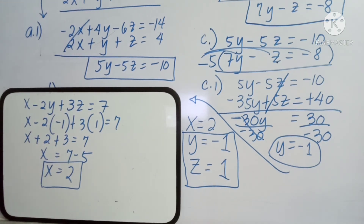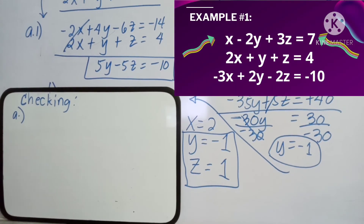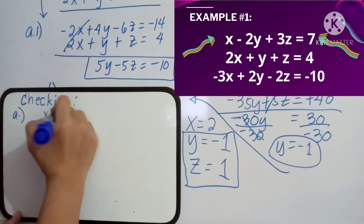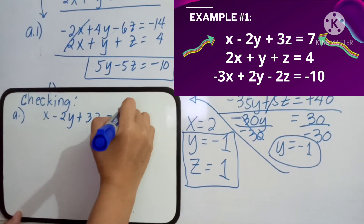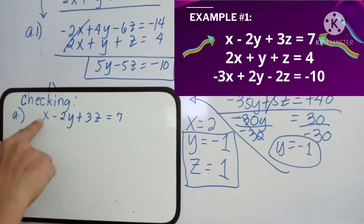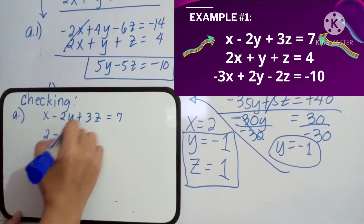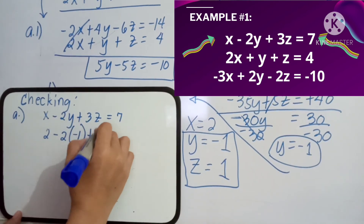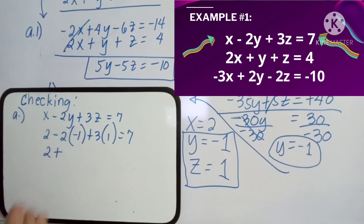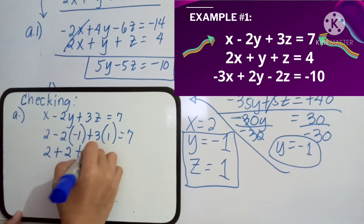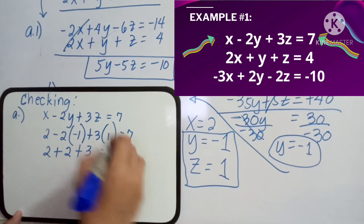Gaya ng sinabi ko kanina, may checking na gagawin para malalaman natin kung tama ba. Kung gagamitin mo yung first equation original, tapos yung second, and then yung third. After mo isubstitute yung tatlong values ng X, Y, at Z, make sure equal yun sa constant. Kasi pag hindi, ibig sabihin may mga mali-mali tayong nagawa. Ayan, nakatama tayo — kasi yung 7, nag-equal man to itself.